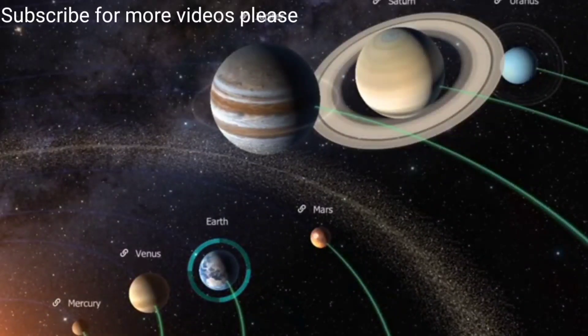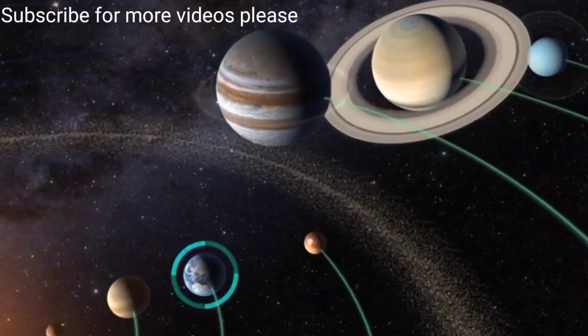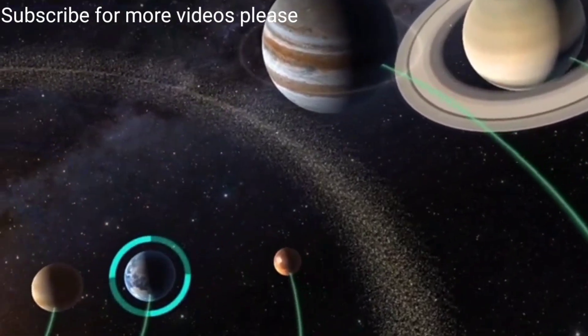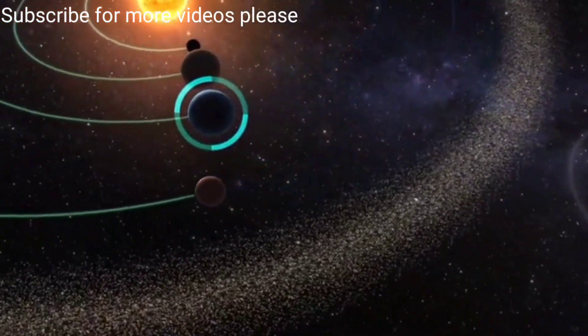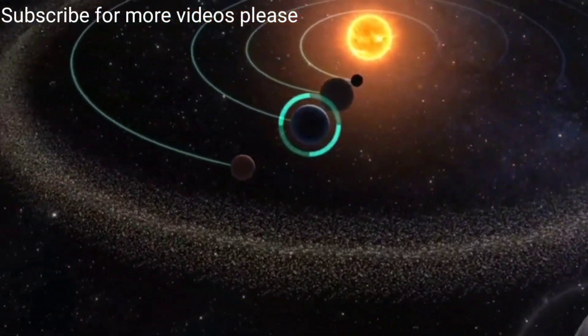The Earth is the third planet from the Sun. It is the fifth largest of the planets, and the largest of the terrestrial planets in terms of diameter, mass, and density. The Earth is the only known planet in the universe where life exists.